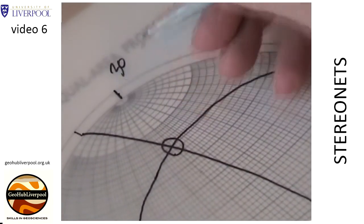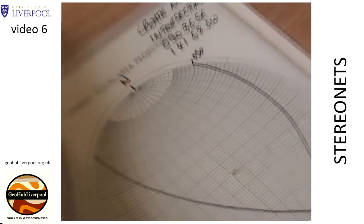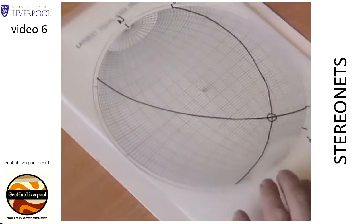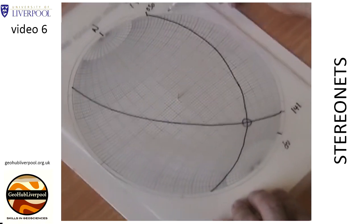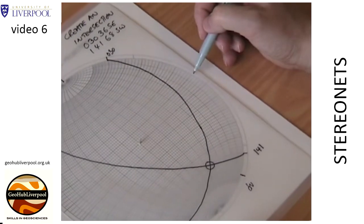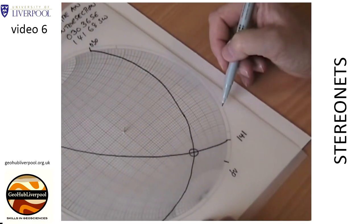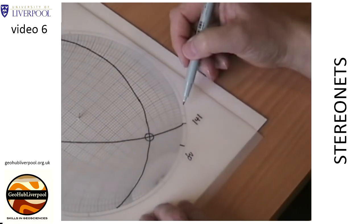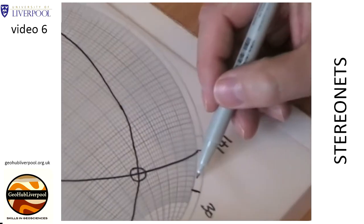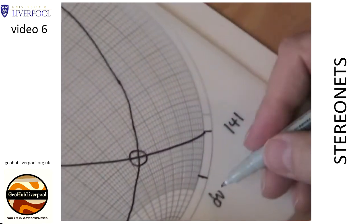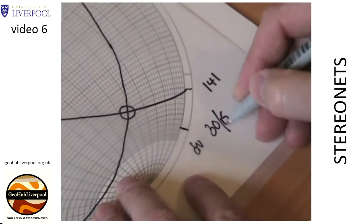Write this reading on the tracing paper and mark the primitive circle to show its plunge direction. Rotate the tracing paper so that the north pole is in its original position on the stereonet. Count around the primitive circle to determine the plunge direction — the heavy lines are at 10 degrees and the subdivisions are at 2 degrees. In this case, the plunge direction is at 155 degrees. Record the plunge and plunge direction of the lineation on the tracing paper.